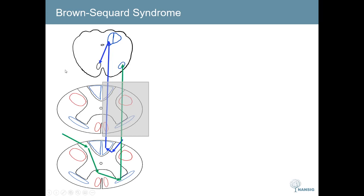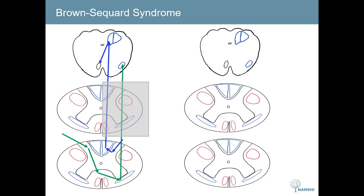The spinothalamic tracts, by contrast, decussate in the anterior white matter at the level they enter, so you will always lose contralateral pain and temperature below the lesion. At the level of the lesion itself, you lose all sensation of pain, temperature, and non-discriminative touch on both sides. For motor function, the corticospinal tract decussates in the pyramids of the medulla, and therefore motor loss will always be ipsilateral to the side of the lesion.